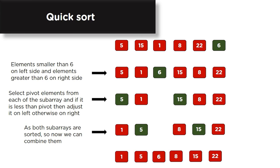We divide the array into two sub-arrays based on the pivot so that elements smaller than 6 are on the left and elements greater than 6 are on the right. We then sort both sub-arrays separately, selecting a new pivot from each — for example, 5 from the first sub-array and 15 from the second. Elements less than each pivot go left, greater go right. Both sub-arrays become sorted and are combined into a complete sorted array.